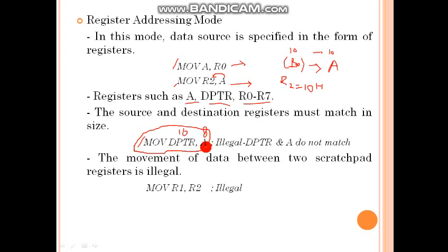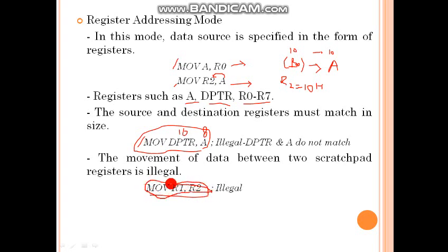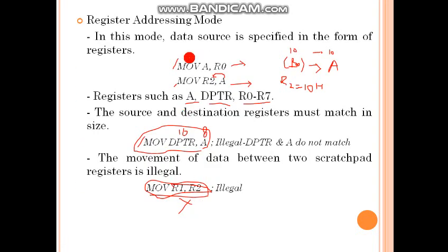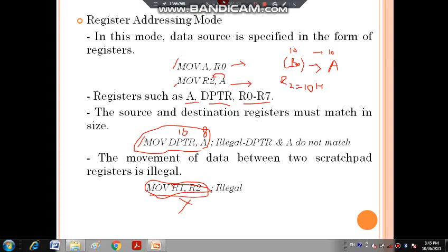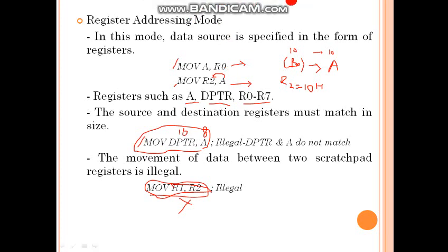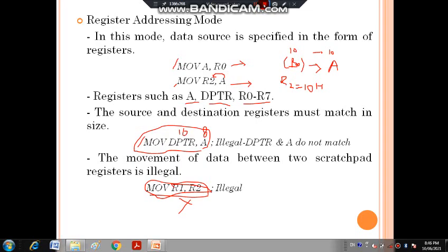Also, the movement of data between two scratch pad registers is illegal. For example, the instruction MOV R1, R2 — if you use two scratch pad registers, this instruction is illegal. So this is a simple example of register addressing mode. In this mode, registers are used to specify the data source and destination. Thank you very much.